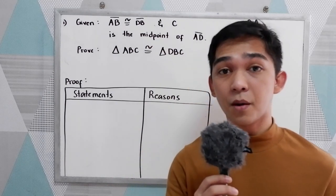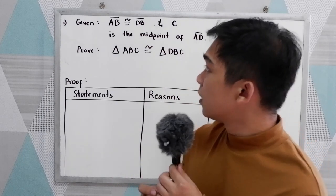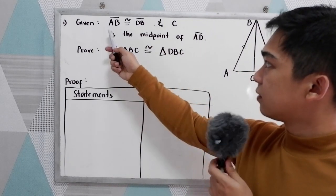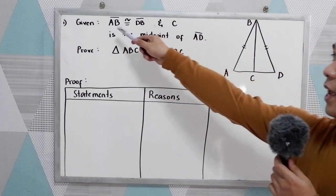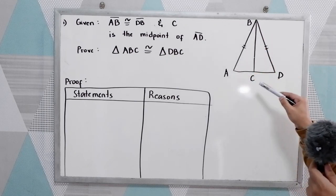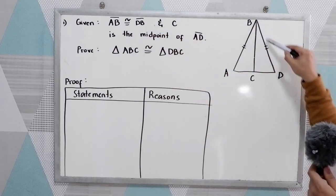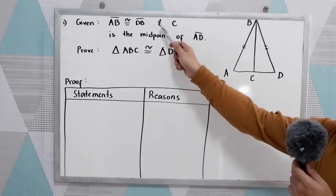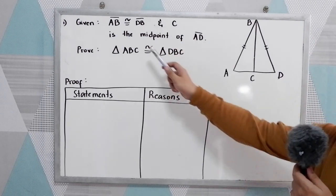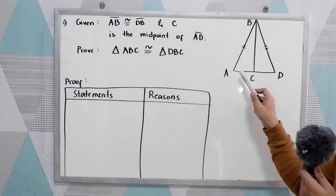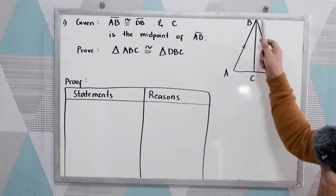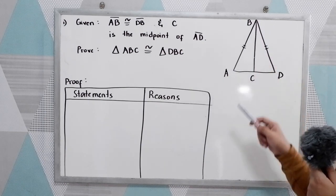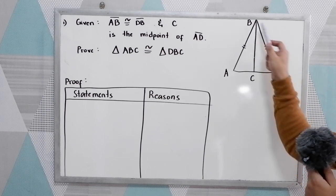Now let's have our problem number one. So we have the given and the illustration. AB is congruent to DB, and C is the midpoint of AD. We are going to prove that triangle ABC is congruent to triangle DBC.